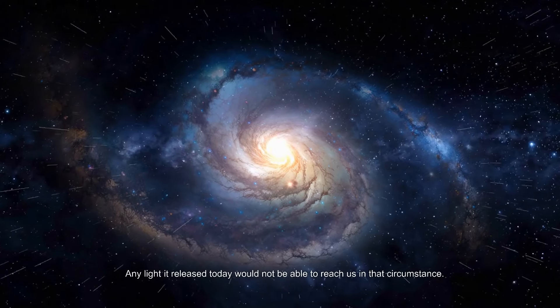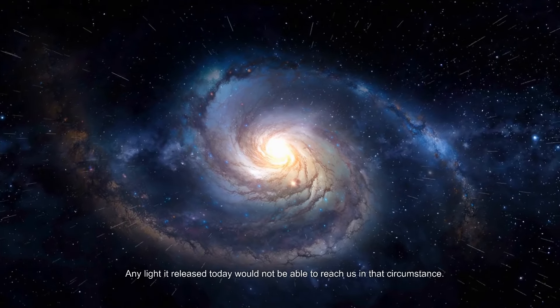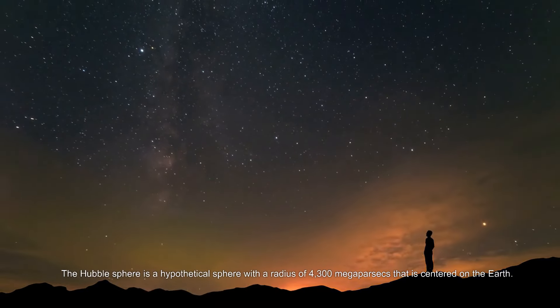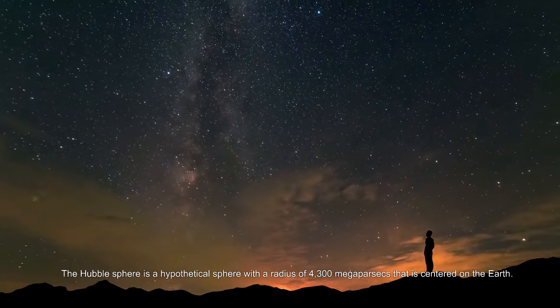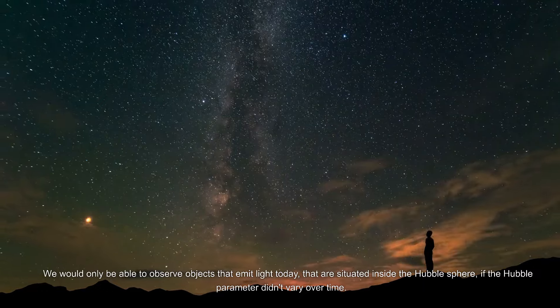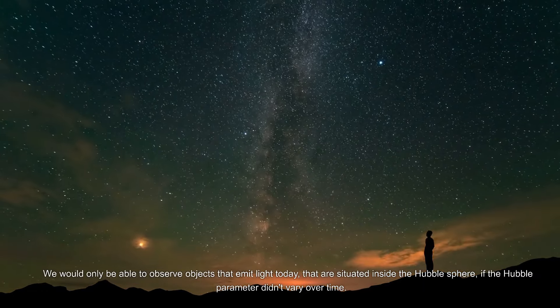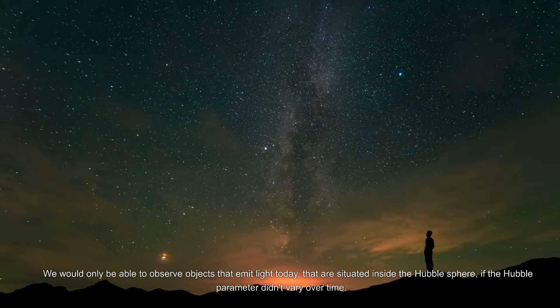The Hubble sphere is a hypothetical sphere with a radius of 4,300 megaparsecs that is centered on Earth. We would only be able to observe objects that emit light today that are situated inside the Hubble sphere if the Hubble parameter didn't vary over time.